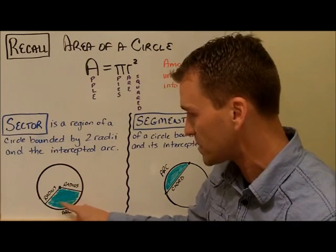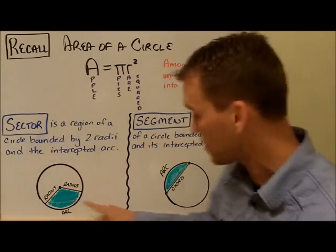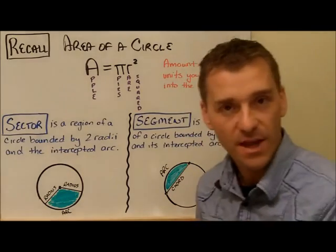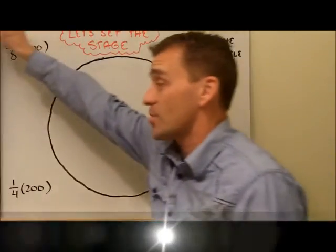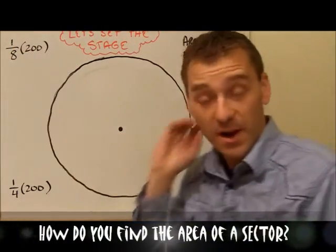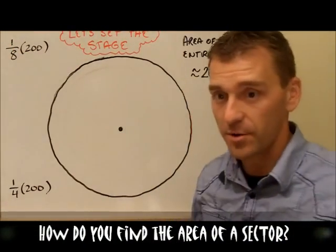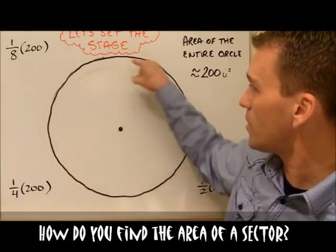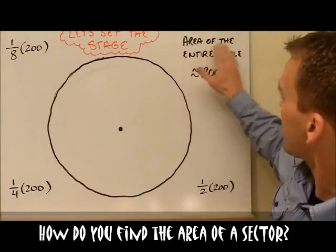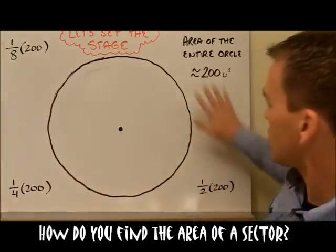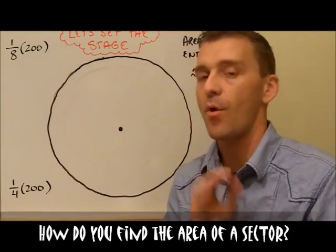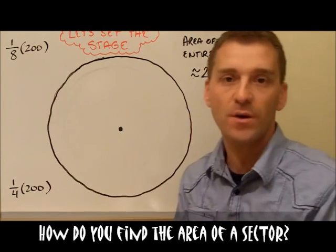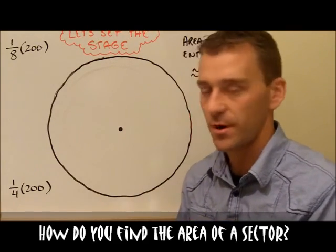That's called the sector. We're going to find the area of this sector, how to find the area of any sector, and how to find the area of the segment. That is rock and roll. Now before we do any of this, I'm going to try to set the stage for you here. Let's say the area of this entire circle is somewhere around approximately 200. Now I'm only using 200 because it's an easy number to kind of deal with to set the stage for you.